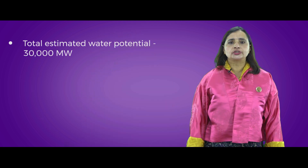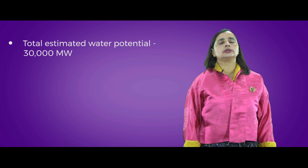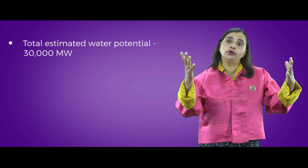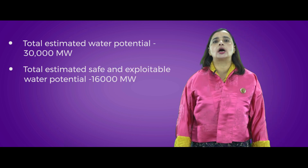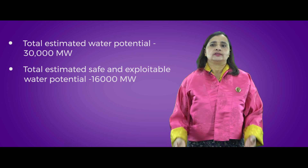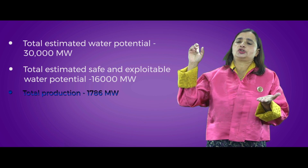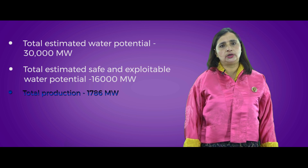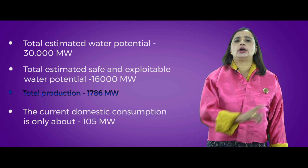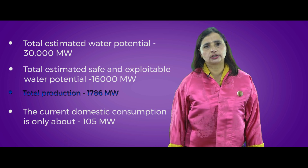Please note these important figures. The total water potential estimated for Bhutan is 30,000 megawatts. However, the safe and exploitable water potential is just 16,000 megawatts. The current total production is 1,786 megawatts, of which only 105 megawatts is used for domestic consumption.